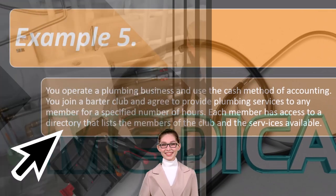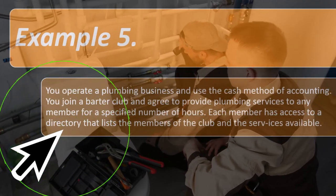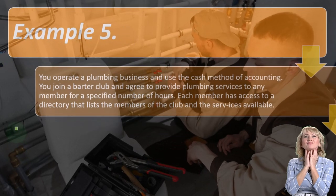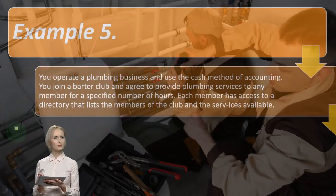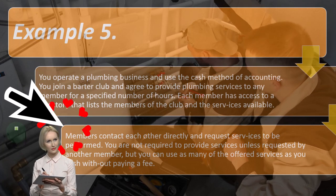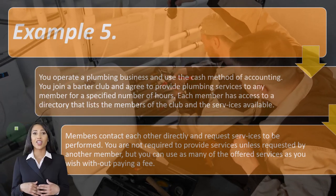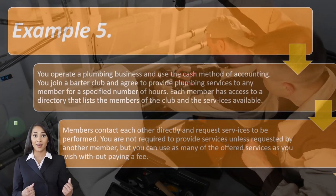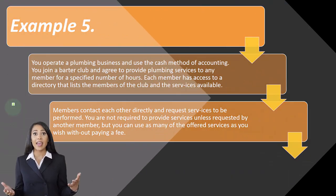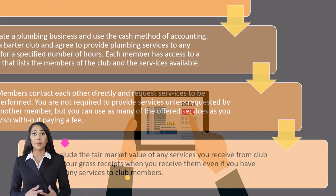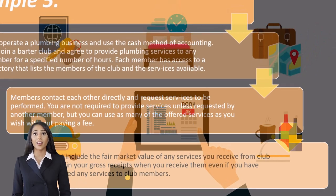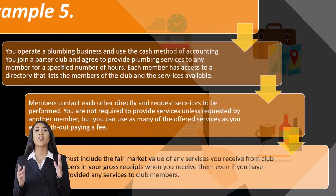Example five: you operate a plumbing business and use the cash method of accounting. You join a barter club and agree to provide plumbing services to any member for a specified number of hours. Each member has access to a directory listing members and services. Members contact each other directly. You must include the fair value of any services you receive from club members in your gross receipts when you receive them, even if you have not yet provided any services to club members.